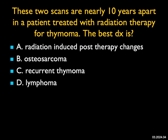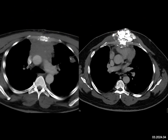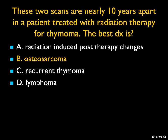These two scans are nearly 10 years apart in a patient treated with radiation therapy for thymoma. On the image on the left you see an anterior mediastinal mass — that's a thymoma. On the image on the right, the thymoma is gone but there's a large mass anterior to and involving the sternum. It doesn't look like recurrent thymoma. What I see is a very dense matrix involving the sternum and the soft tissue anterior to it. One complication of radiation therapy — fortunately uncommon — is developing a sarcoma, either chondrosarcoma or osteosarcoma. This was an osteosarcoma, post-radiation for thymoma, presenting a decade later.